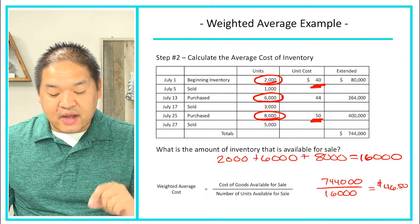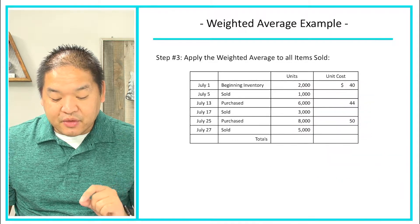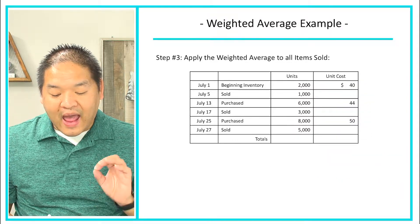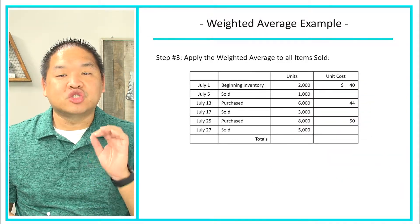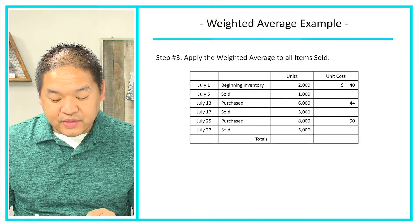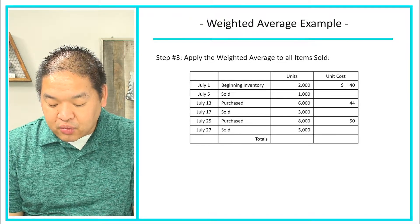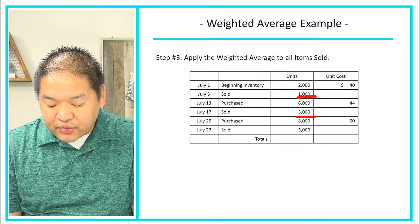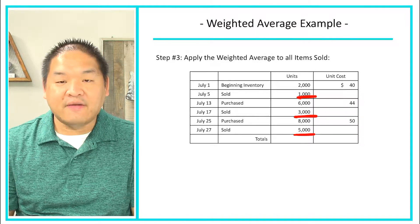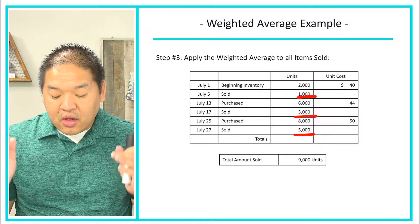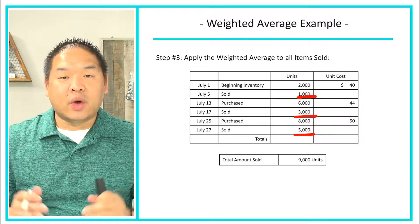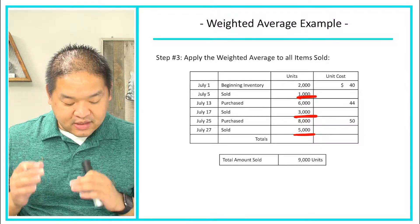Let's move on to step number three. In step number three we're going to apply the weighted average to all items sold. So how many units did we sell? Well we sold 1,000 units, we sold 3,000 units, and we sold 5,000 units. So total, 5,000 plus 3,000 plus 1,000 is 9,000 units.